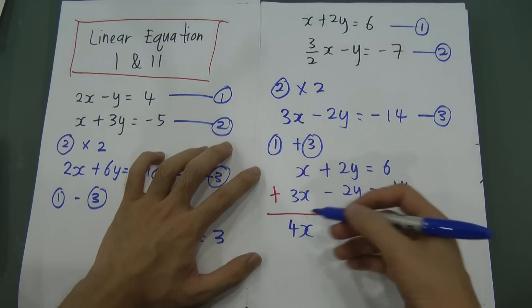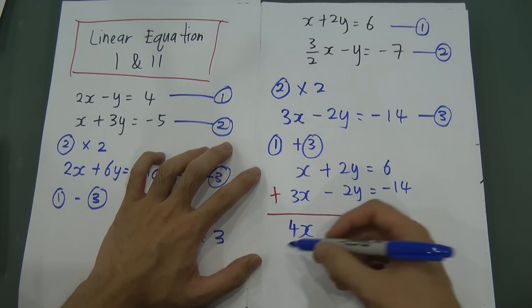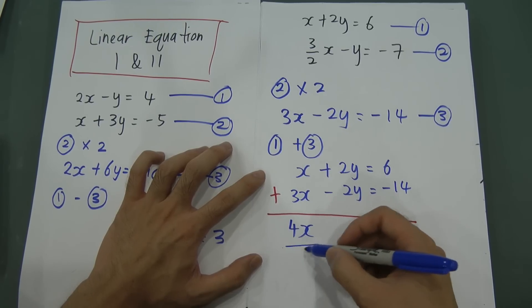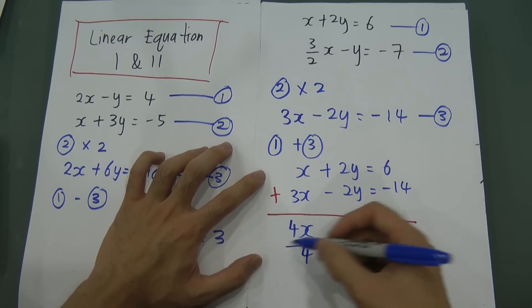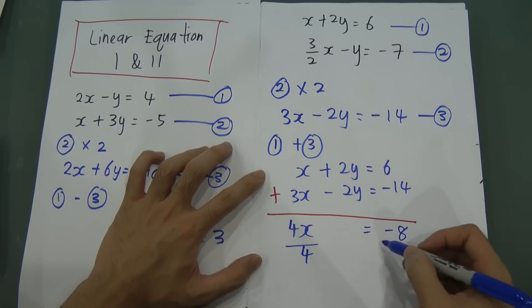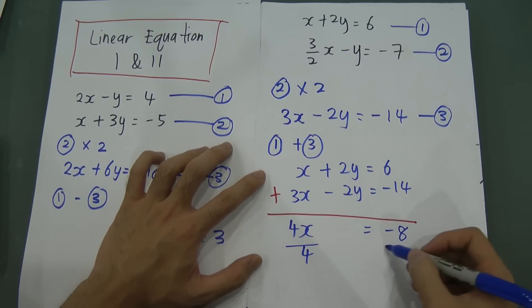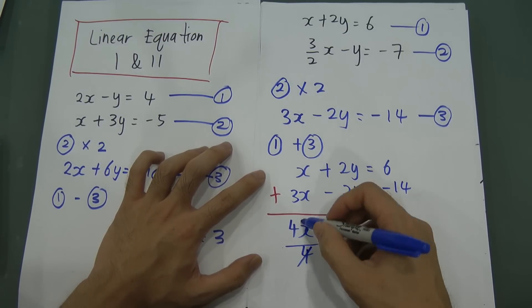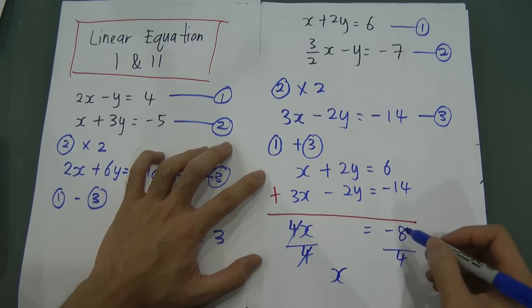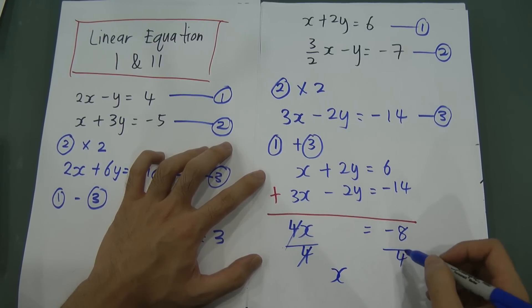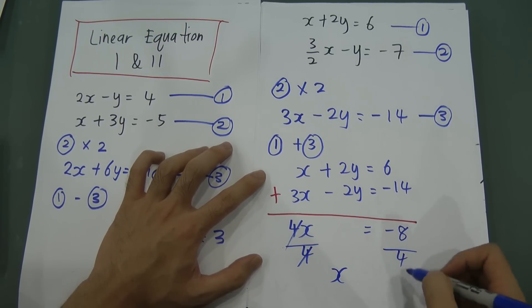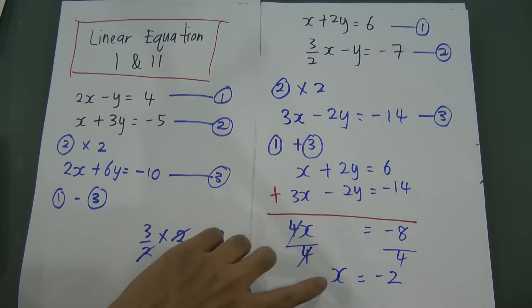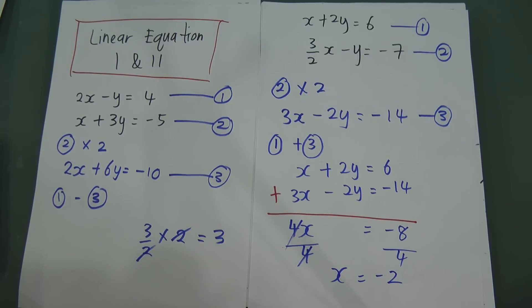Therefore 4x equals negative 8. To find x, I divide both sides by 4. 4 and 4 cancel, leaving x equal to negative 8 divided by 4, which gives negative 2. So x equals negative 2.